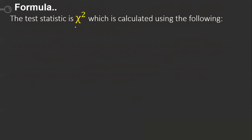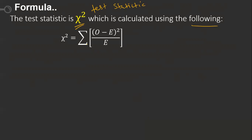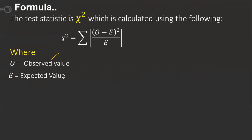Before working the example, here is the formula. The test statistic chi-square is calculated as: χ² = Σ (O − E)² / E, where O is the observed value and E is the expected value. We sum this over all observed and expected value pairs.